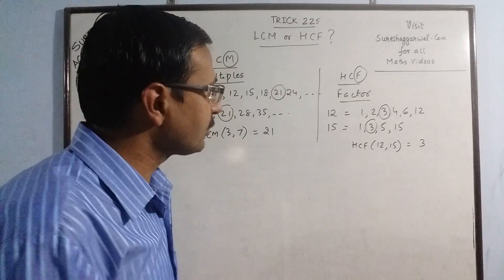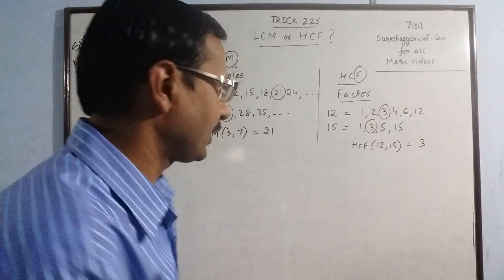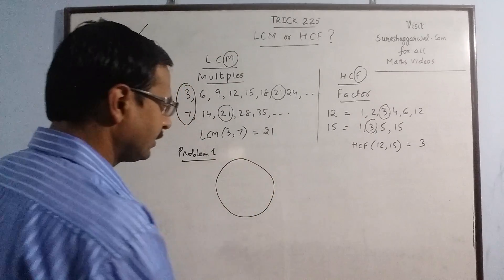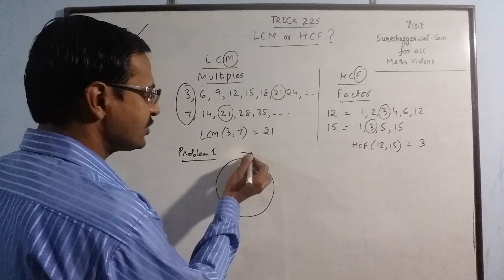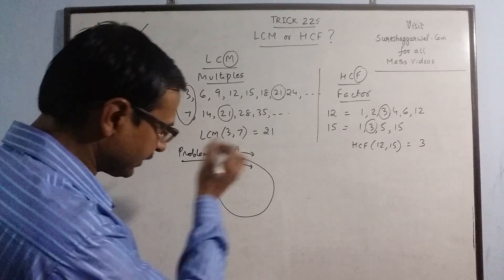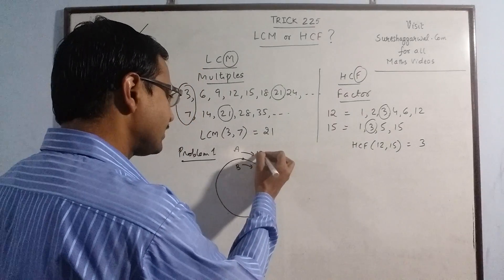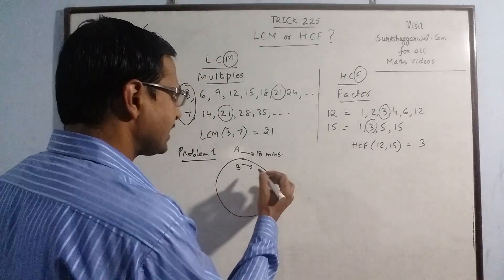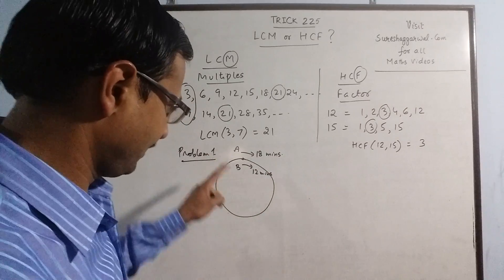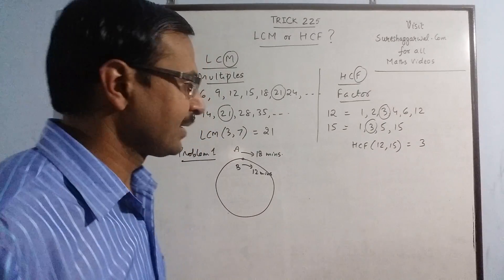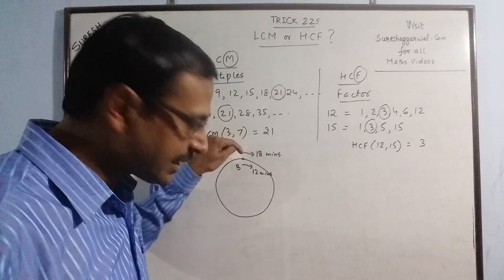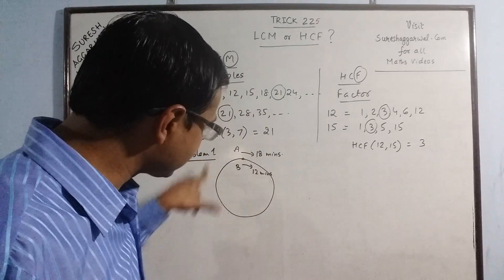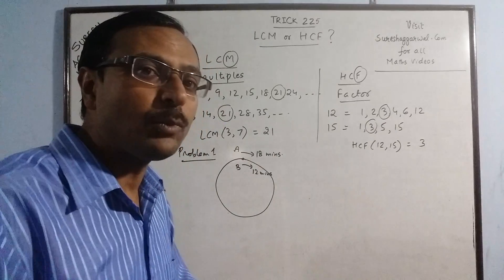In Problem 1, we have a circular garden with a starting point from which two persons A and B start moving around the circular path. A takes 18 minutes to go once around the circular path, whereas B takes only 12 minutes. We need to find after how many minutes these two persons will be at the starting point together. They start at the same point at the same time but take different times to cover the circumference once.